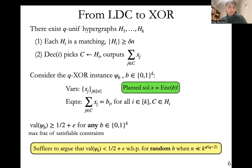In particular, it suffices to argue that if I choose a random b, then with high probability, the value will be less than half plus epsilon, because then there exists such a b. And if we can show this when n is less than k^(q/(q-2)), then we have recovered our desired lower bound, because we know if n is less than k^(q/(q-2)), then these instances cannot be satisfiable, and therefore these hypergraphs cannot correspond to a valid LDC.